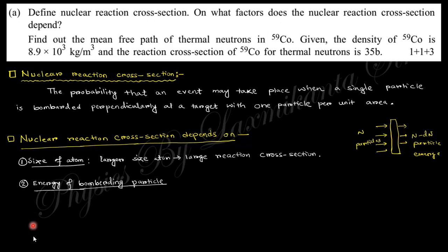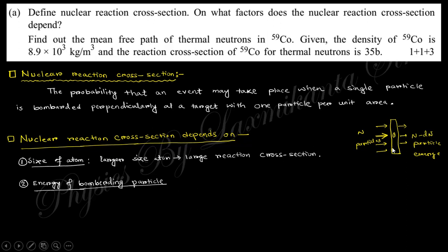Suppose there is a unit area with one particle present. If you bombard with a single particle, the probability that this event occurs is known as the nuclear reaction cross section. This cross section depends on the energy of the incident particle and the number density. If the size of the atom is large, the nuclear cross section will be large. If the energy of the bombarding particle is less, the collision probability will be higher.